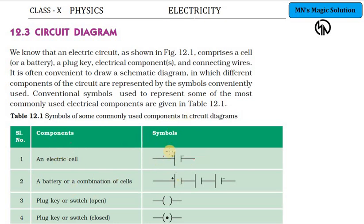The first component is a cell. A cell has positive and negative terminals. The positive terminal is represented by a longer line, and the negative by a shorter line.